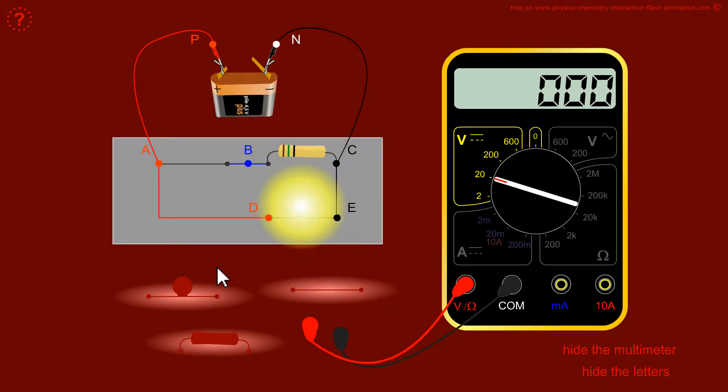If we make a parallel circuit, VAC is the same. Here a lamp and a resistor. When we measure VPN, we obtain 4.16 volts.